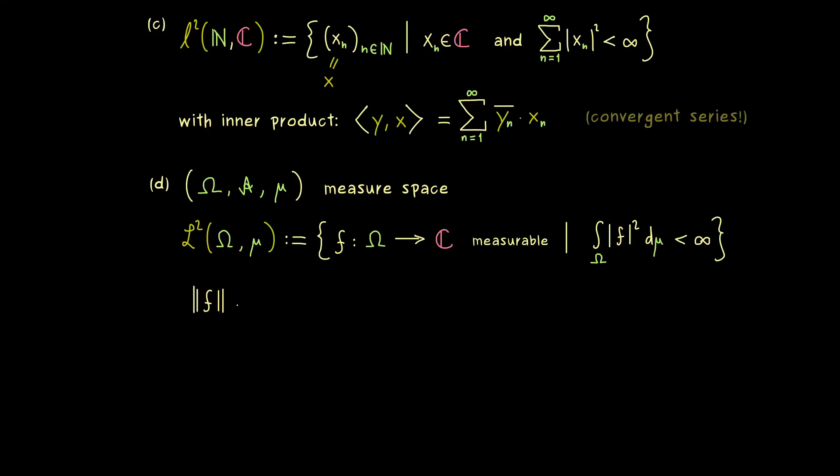Namely, we could definitely define the norm of f in the same sense as before. This means take this finite integral we have and take the square root of it. Then what comes out is a finite number, even a non-negative one, but we don't get a full norm necessarily.